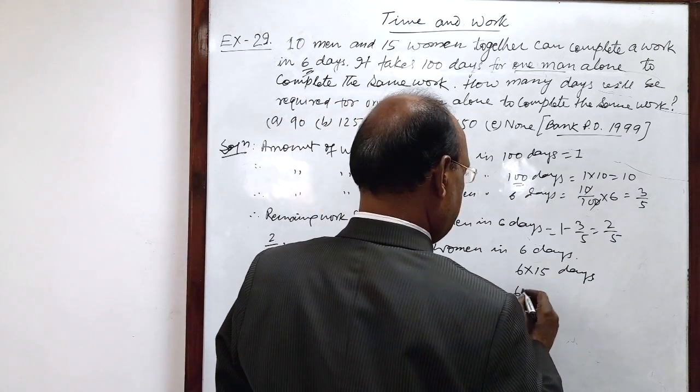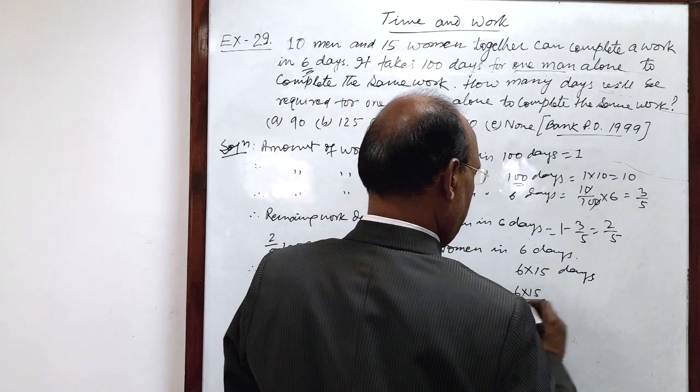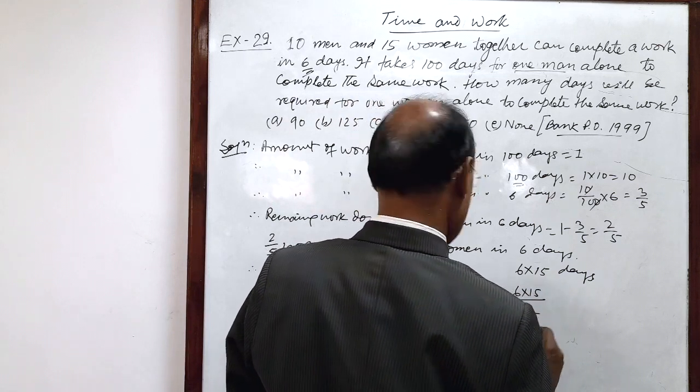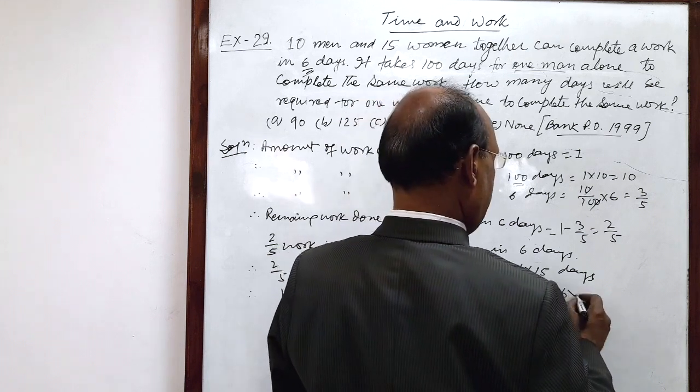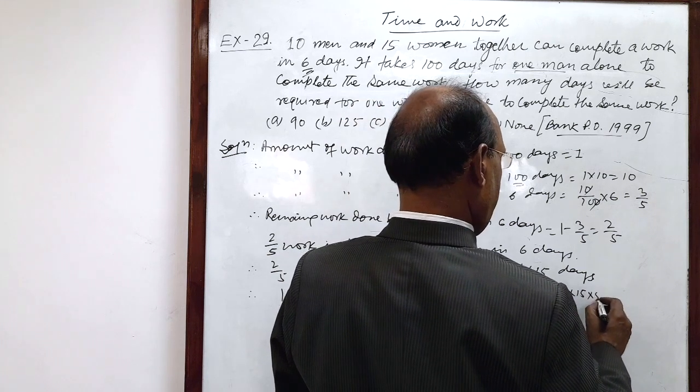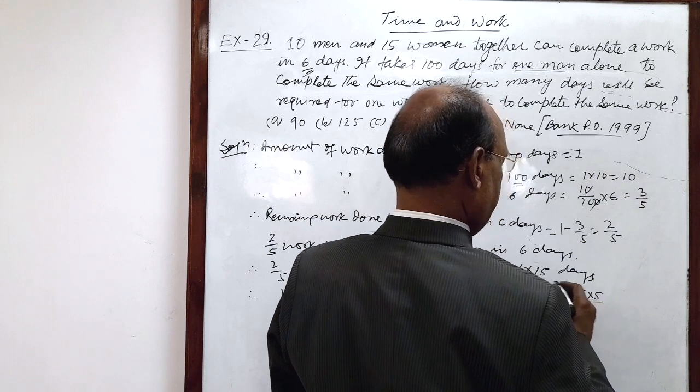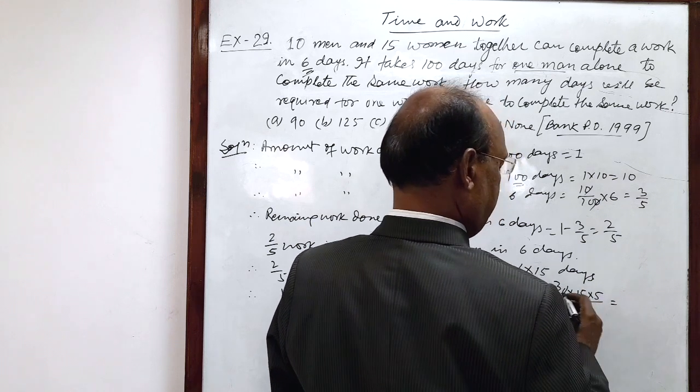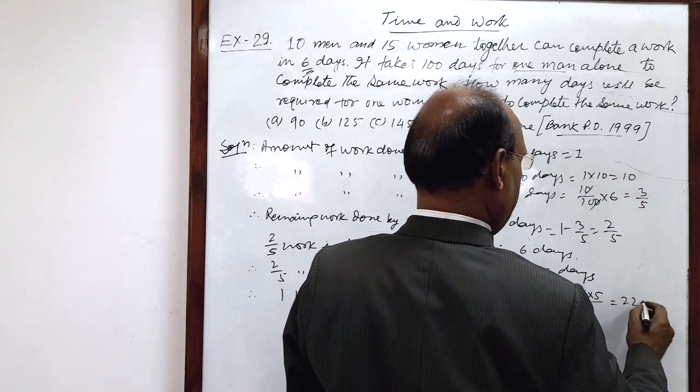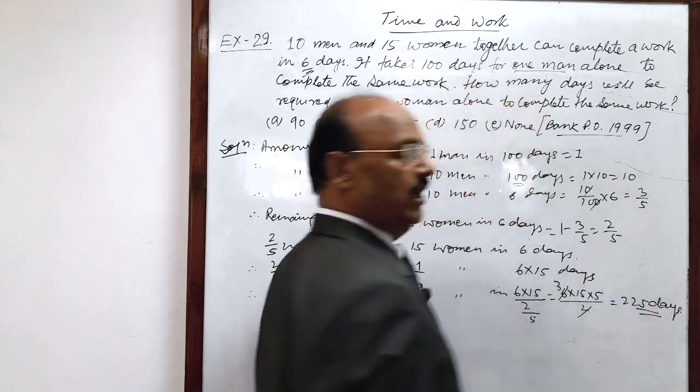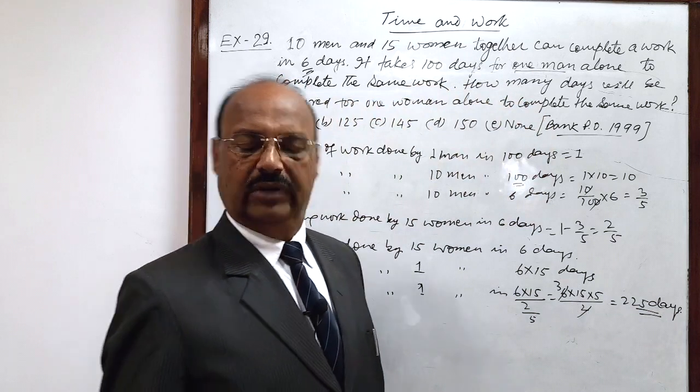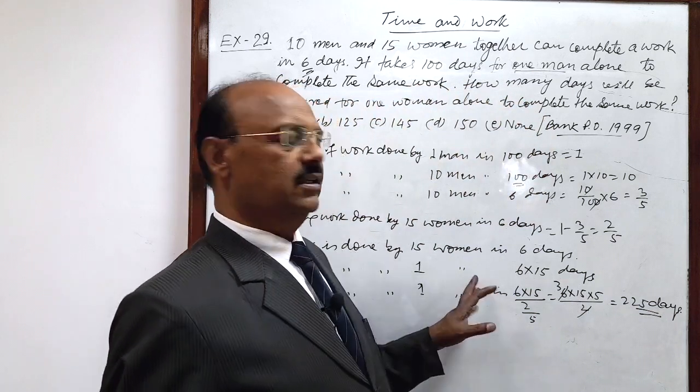So 6 into 15 divided by 2 upon 5, so this is 6 into 15 into 5 by 2. Just 6 and 15 into 15 is 225 days will be required by one woman to complete the same work.